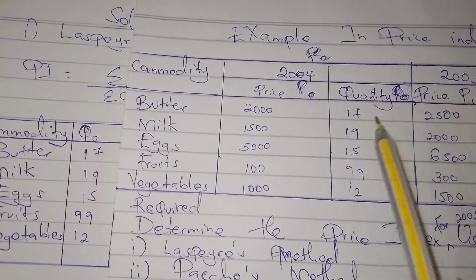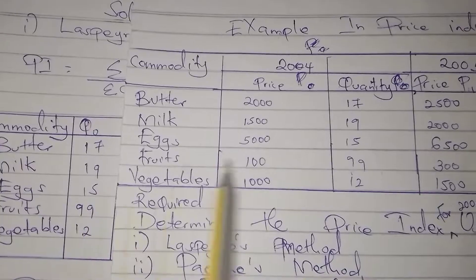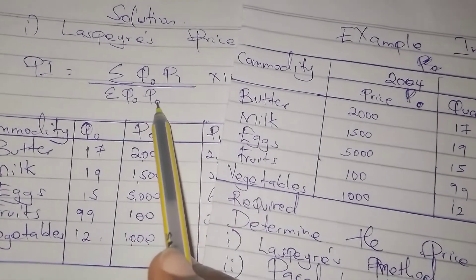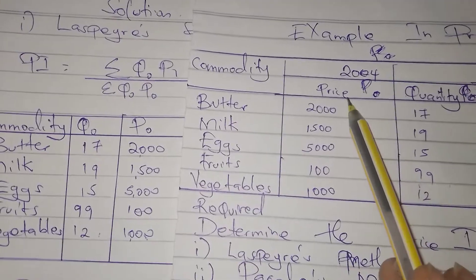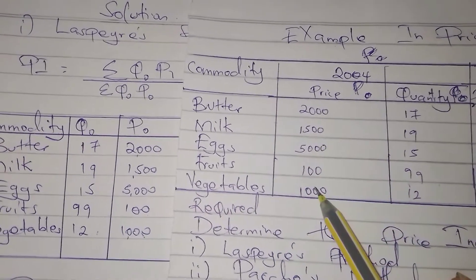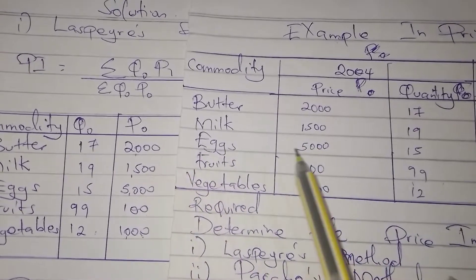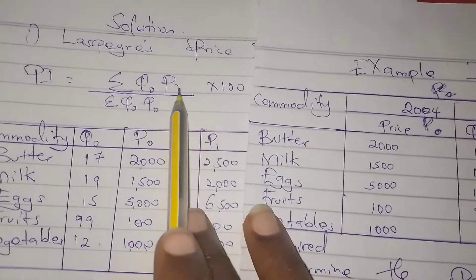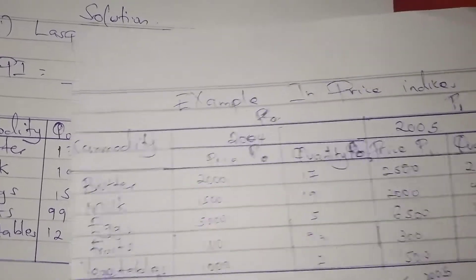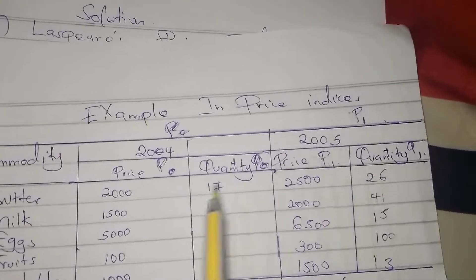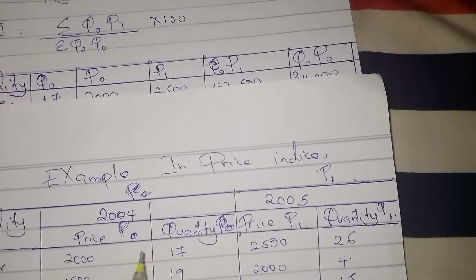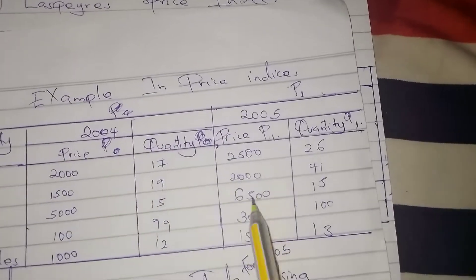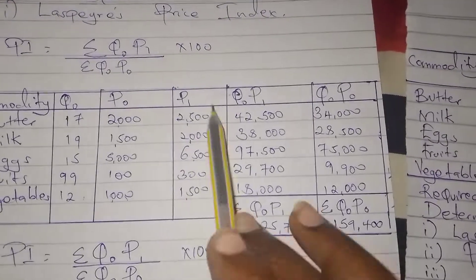For q0 we get the values: 17, 19, 15, 99, and 12. Then for p0, the prices in the base year, we copy them as given in the question: 2000, 1500, 1100, 1000. Then for p1, the prices in the current year, we copy them as well: 2500, 2000, 6500, and so on — you copy all of them into the table.